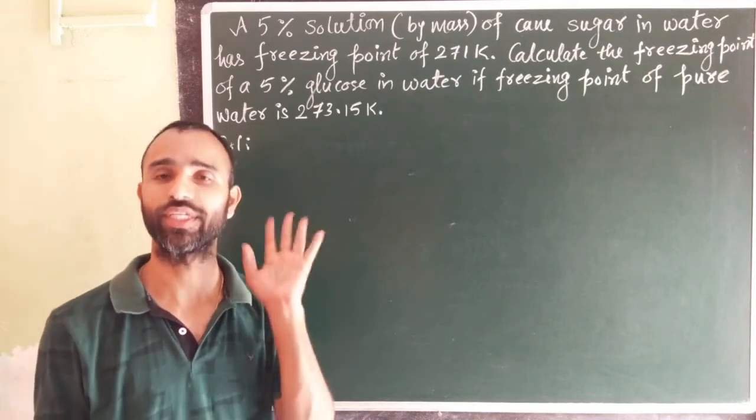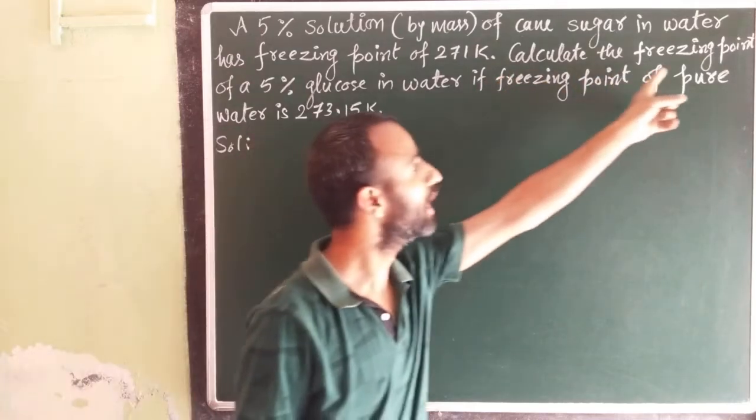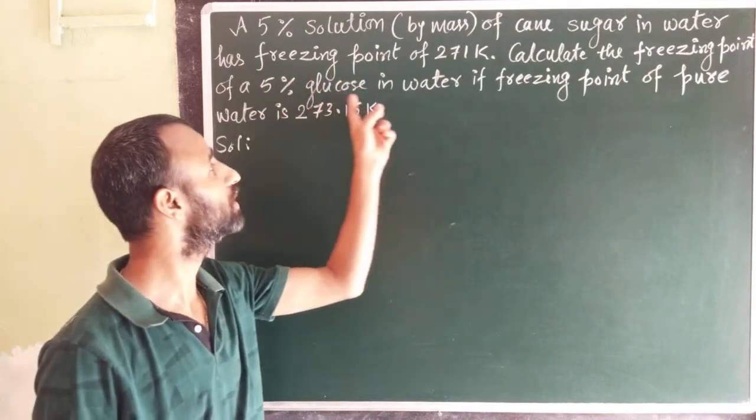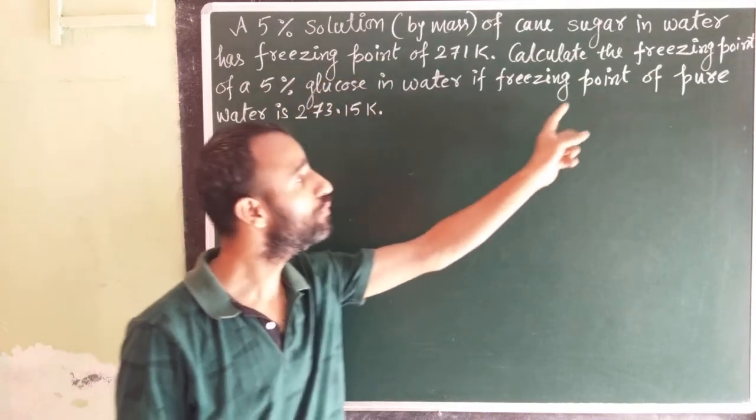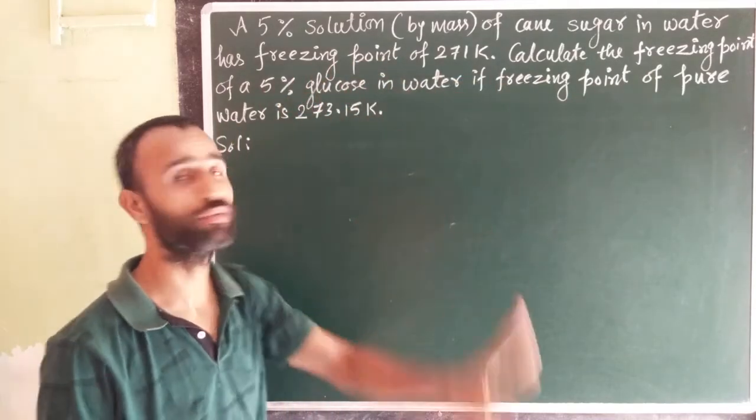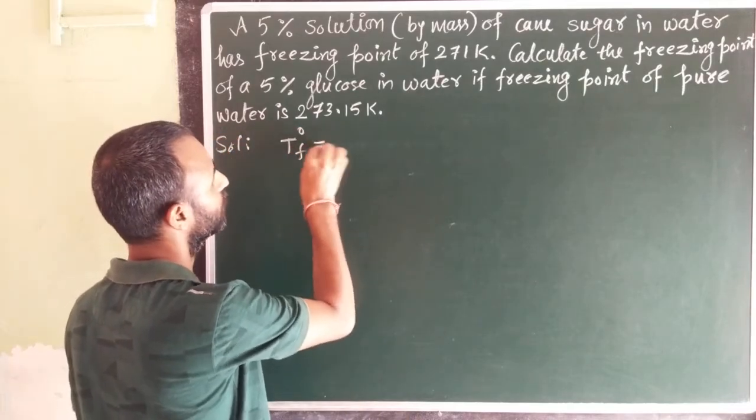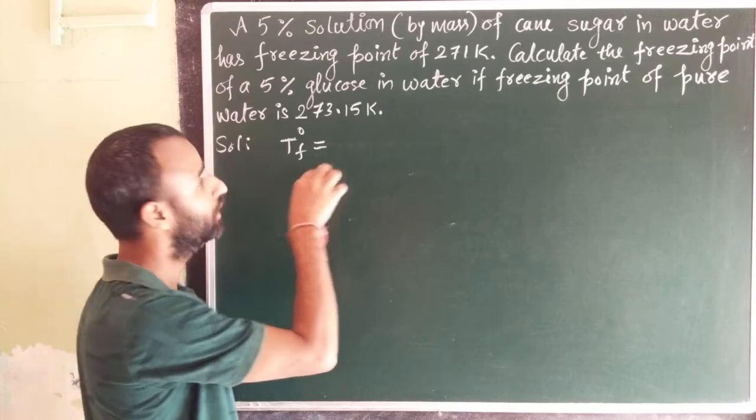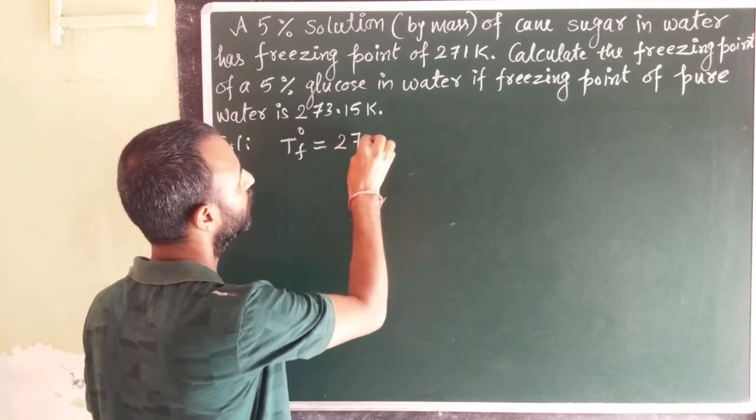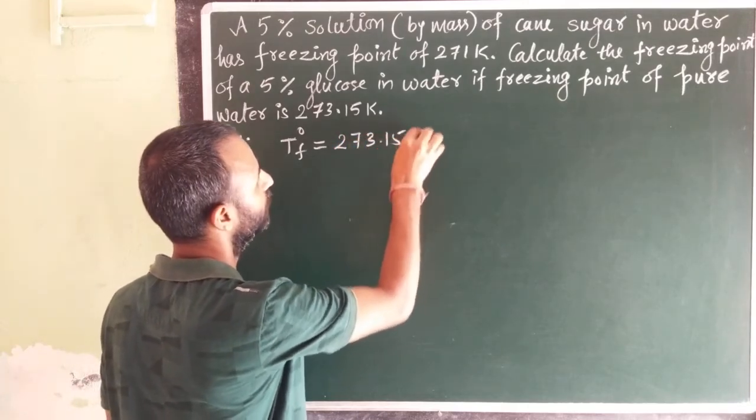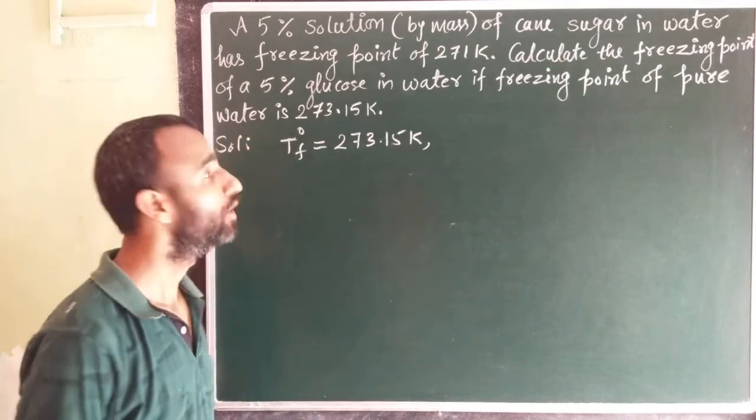We have to calculate freezing point of 5% glucose in water if freezing point of pure water is given to us. That means T0F, freezing point of pure solvent, is 273.15 Kelvin.